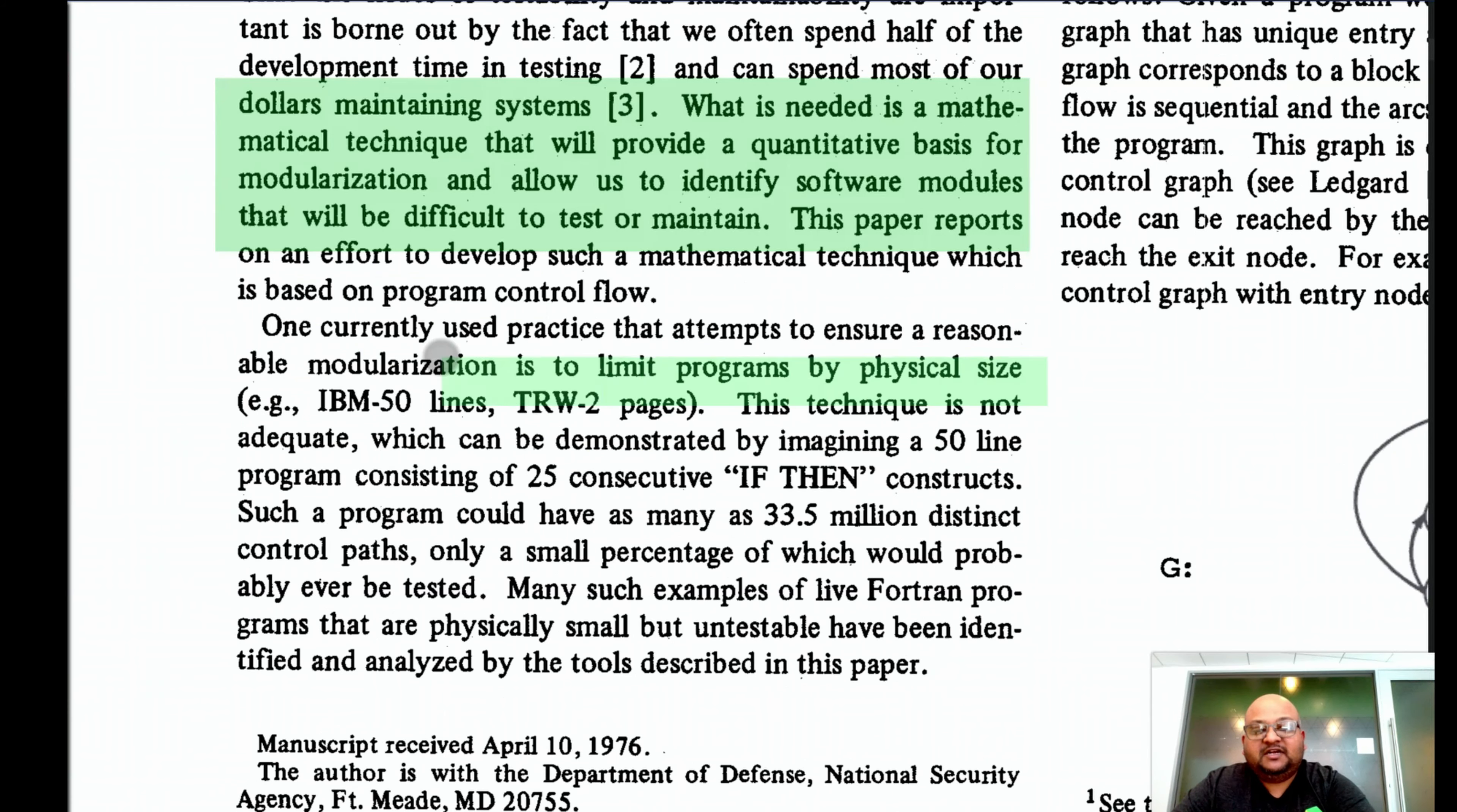A naive attempt to do so would be to limit the physical size of a program, say in number of lines of code. But it is very possible to have short pieces of code that contain a lot of complexity. The example the author uses here is a 50-line program which has 25 consecutive if statements. Such a program would have more than 33 million control paths, and only a small fraction of those would realistically ever get tested.